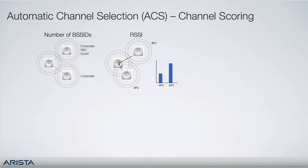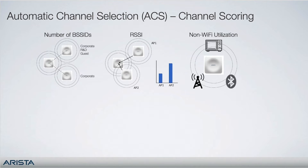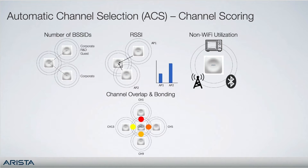This results in co-channel APs being further away from each other, improving both performance and channel reuse. Third, non-Wi-Fi utilization — channels are favored that have the least amount of non-Wi-Fi utilization from devices such as microwaves, telecom antennas, and Bluetooth devices. Channels with over 40% non-Wi-Fi utilization are immediately disqualified. Lastly, channel overlap and bonding — scores are calculated depending on if there are neighboring APs on the same or adjacent channels, including secondary channels in the case of bonding.